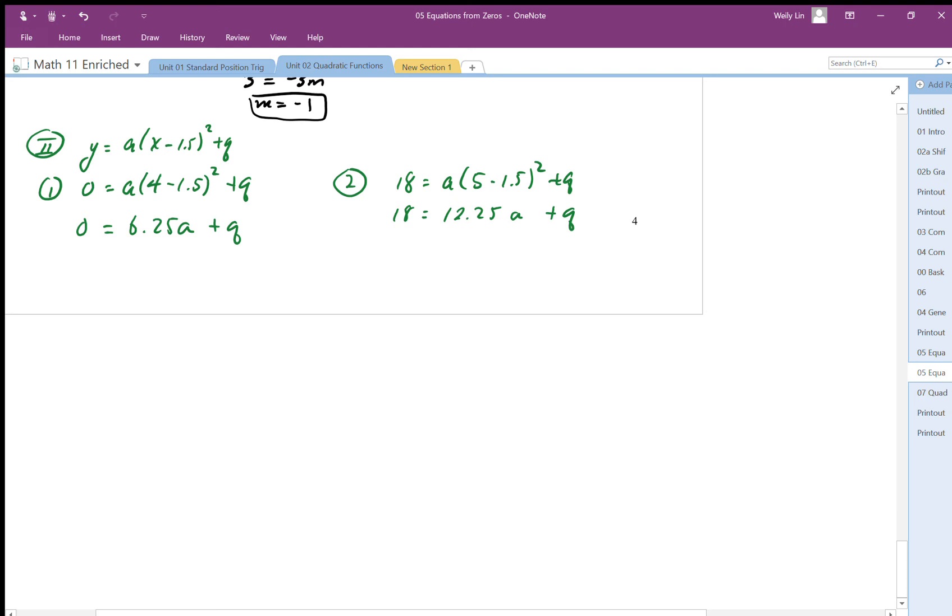There's my second equation. I'm going to subtract equation number one: 0 = 6.25a + q. That gives me 18 = 6a, a = 3, which we solved for previously. Back substituting, I can solve for q. Plug it back into one: I get 6.25 times 3 plus q, I end up with q is equal to -18.75.